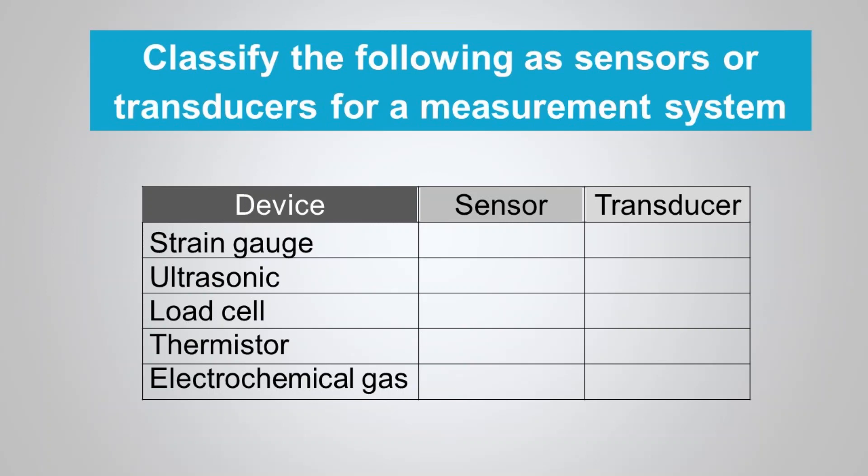As a self-assessment task, classify the following devices as either sensors or transducers when considered as a measuring system.